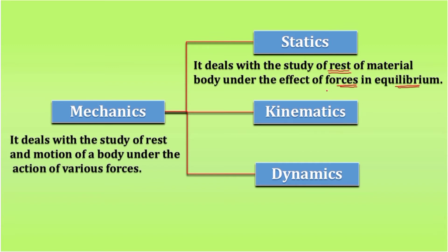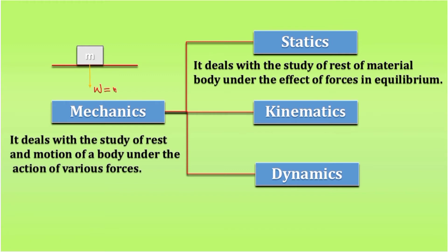To explain balanced forces, we consider a body lying on a surface. The surface is shown and a body of mass m is placed on it at rest. There are forces acting on it — one of the forces is the gravitational force, which is the force exerted by the earth on the body. It acts in the downward direction and is called the weight of the body, given by the equation W = m × g, where m is the mass and g is the acceleration due to gravity.